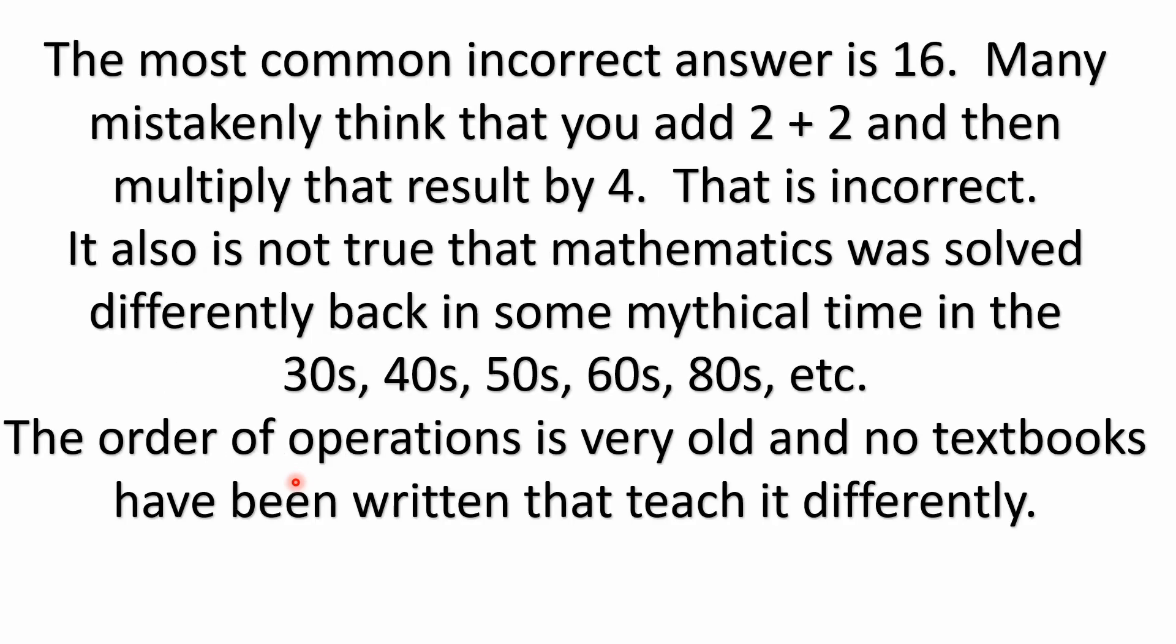And like I said before, the most common incorrect answer is 16. Many will mistakenly think that you add 2+2 and then multiply that result by 4. But that's incorrect. And it's also not true that mathematics was solved differently back in some earlier time, back in the 1930s, 40s, whatever decade you want to choose. The order of operations is very old and there's no textbooks that have been written that teach it any differently than that.